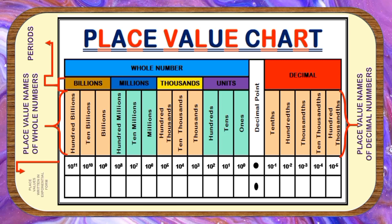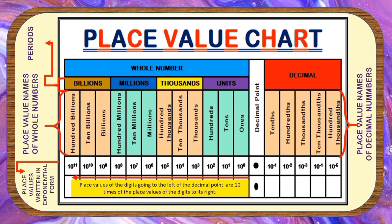This is for the place values written in exponential form. Children, remember this: place values of the digits going to the left of the decimal point are ten times the place values of the digits to its right. And place values of the digits to the right of the decimal point are one-tenth of the place values of the digits to its left.